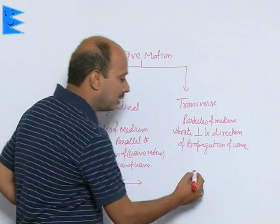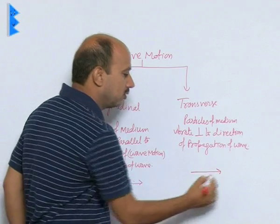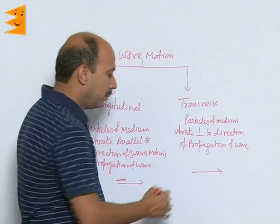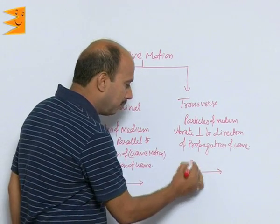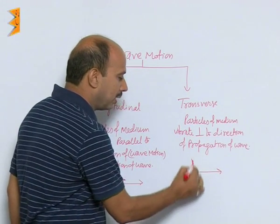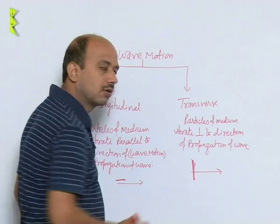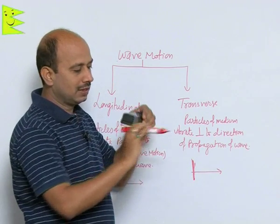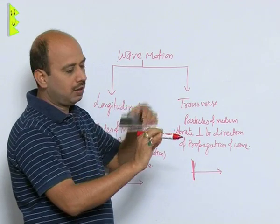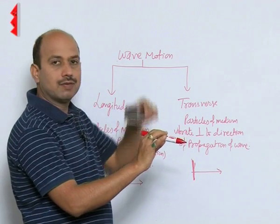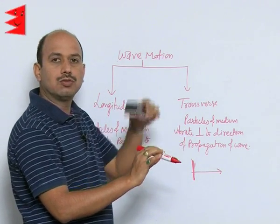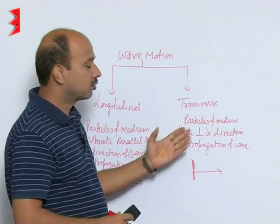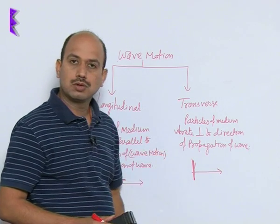If the wave is going like this — this is the direction of propagation — the particles of the medium will vibrate like this, perpendicular to it. This is called transverse wave motion.